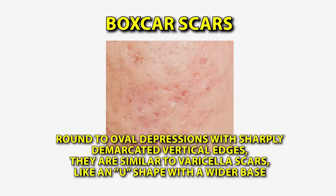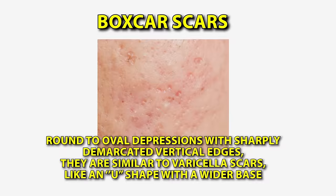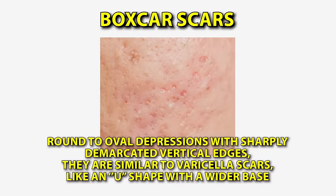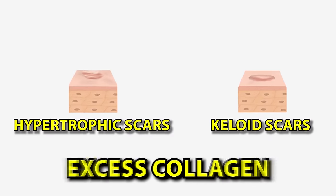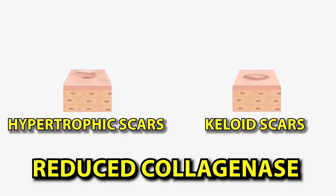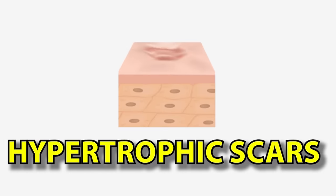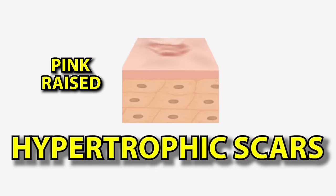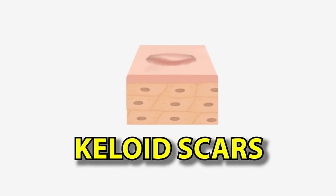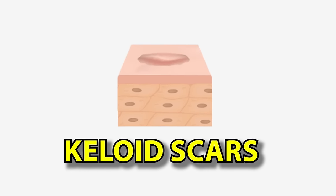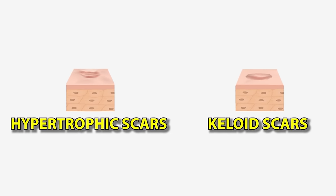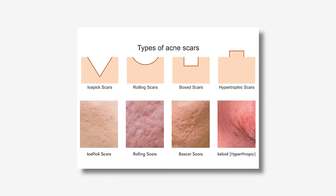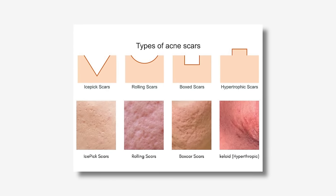Boxcar scars are round to oval depressions with sharply demarcated vertical edges, similar to varicella scars — like a U-shape with a wider base. Hypertrophic scars and keloids come with excess collagen and reduced collagenase activity. Hypertrophic scars are usually pink, raised, and firm. Keloids are reddish-purple papules and nodules that go beyond the borders of the original wound. Both are more common in darker skin and usually appear on the trunk. Depending on the type of scar, there are different methods for removal.